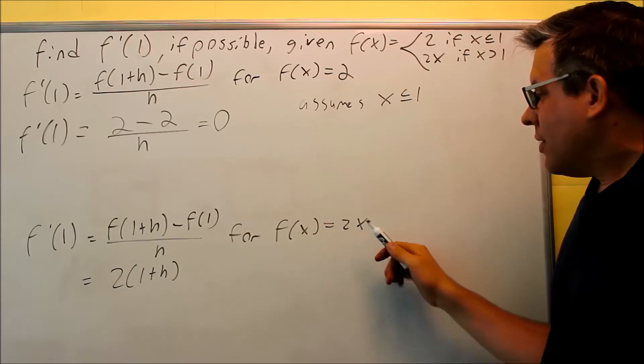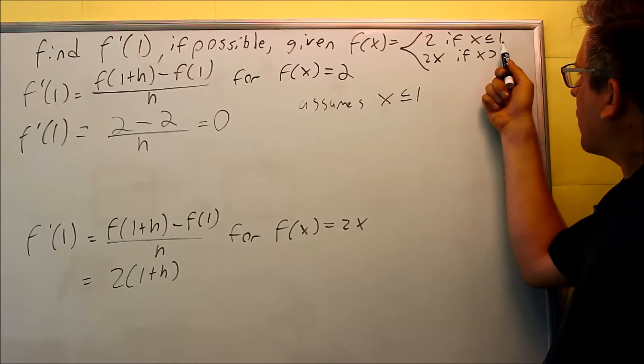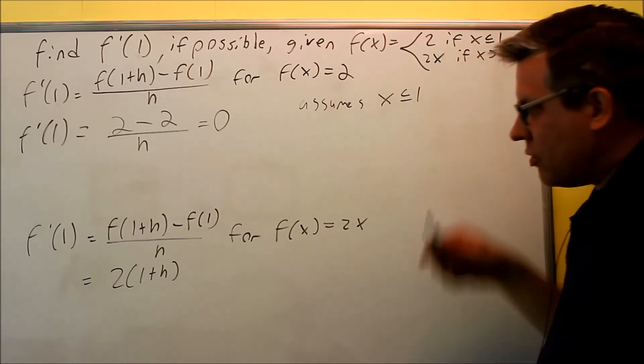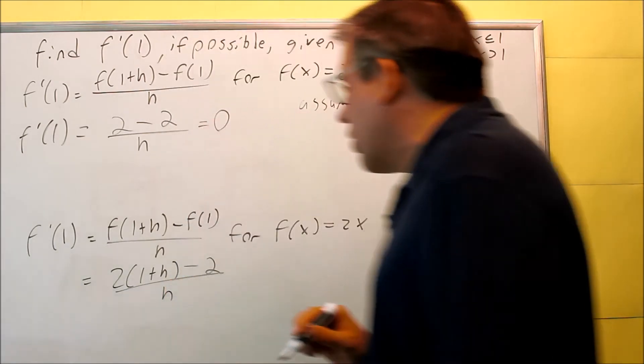I'm not putting 1, I'm not using this, I've got to use this first one. So for here, if x is less than or equal to 1, I have 2. So I have minus 2 here, that's over h.